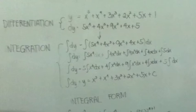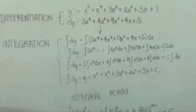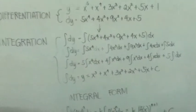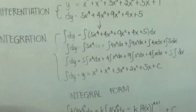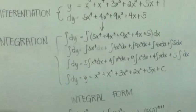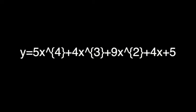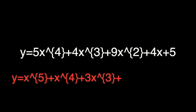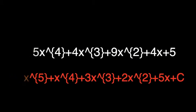This means that even if I add plus 5, plus 10, plus 64, or even plus 1,000 to the original polynomial, I would still get the same integral. Therefore, the general integral of 5x to the 4th plus 4x cubed plus 9x squared plus 4x plus 5 is x to the 5th plus x to the 4th plus 3x cubed plus 2x squared plus 5x plus C.